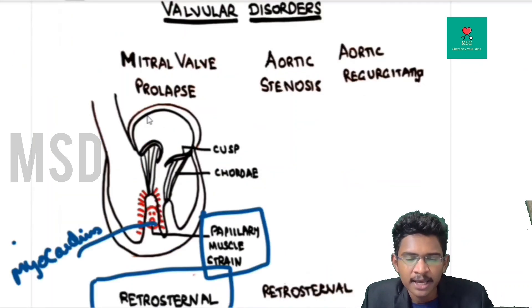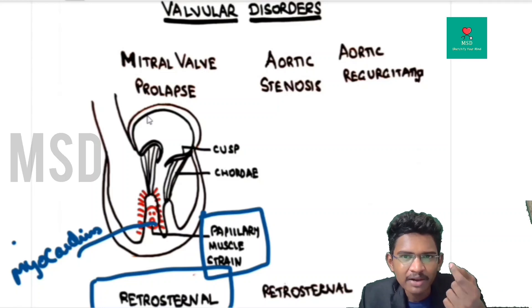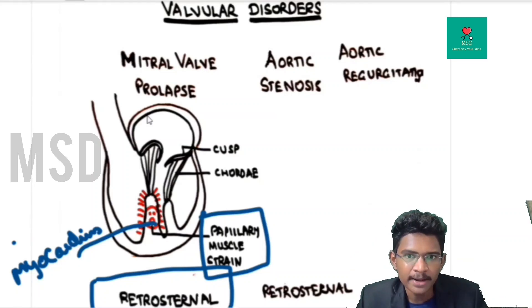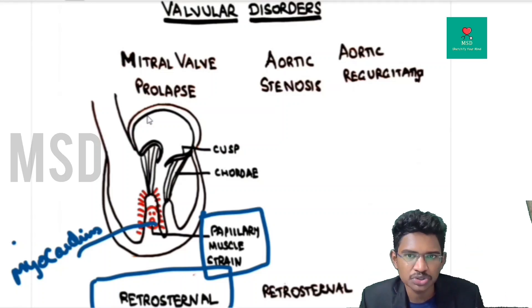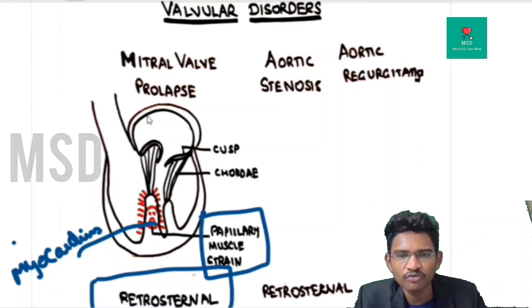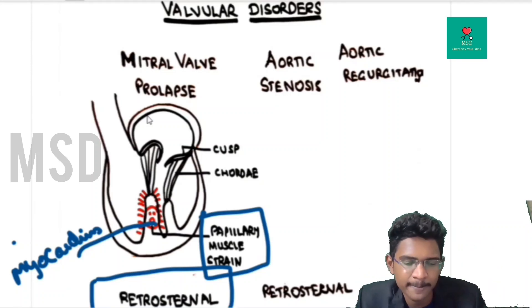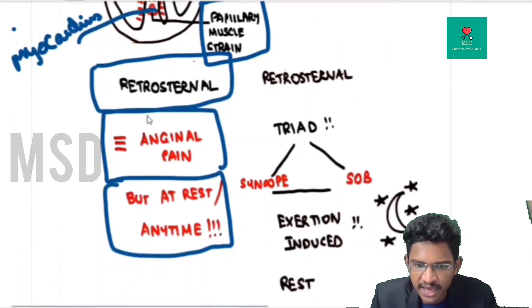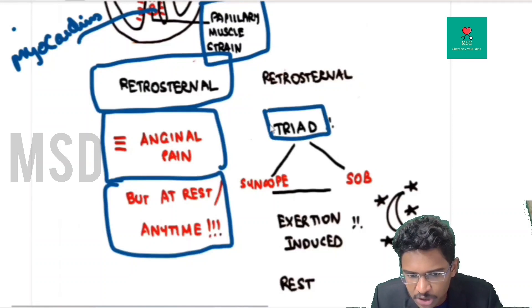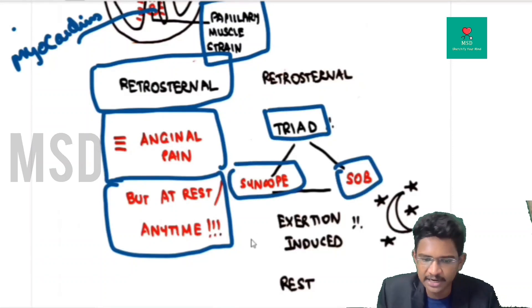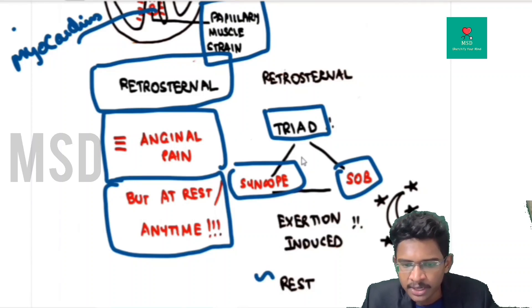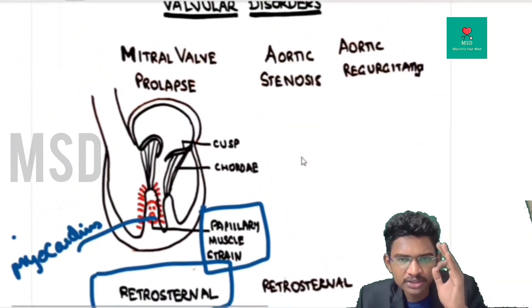In aortic stenosis, the stenotic valve pumps only a small amount of blood. On exertion, the left ventricle — already hypertrophied — cannot match blood flow demand, leading to chest pain. The classical triad is: exertion-induced chest pain, exertion-induced syncope, and exertion-induced shortness of breath. It is relieved by rest.